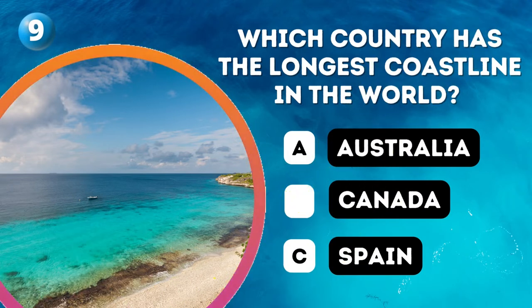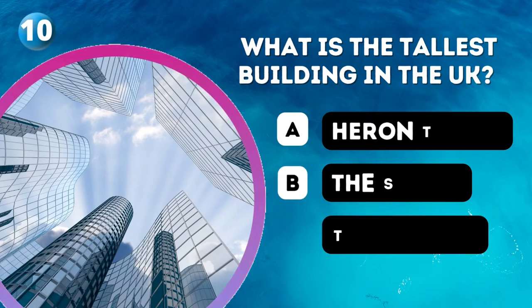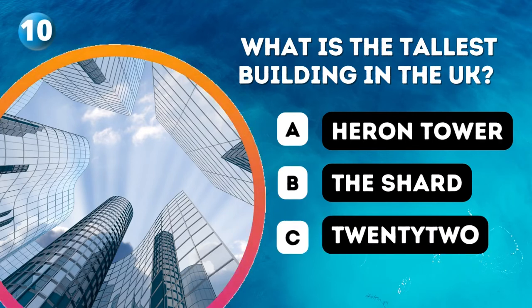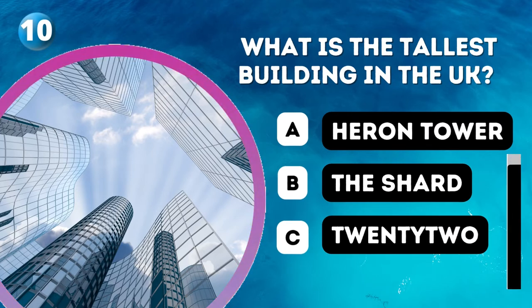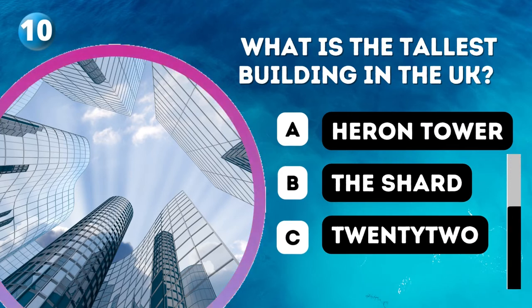Question 10. What is the tallest building in the UK? A. Hurran Tower, B. The Shard, C. 22 Bishopsgate.